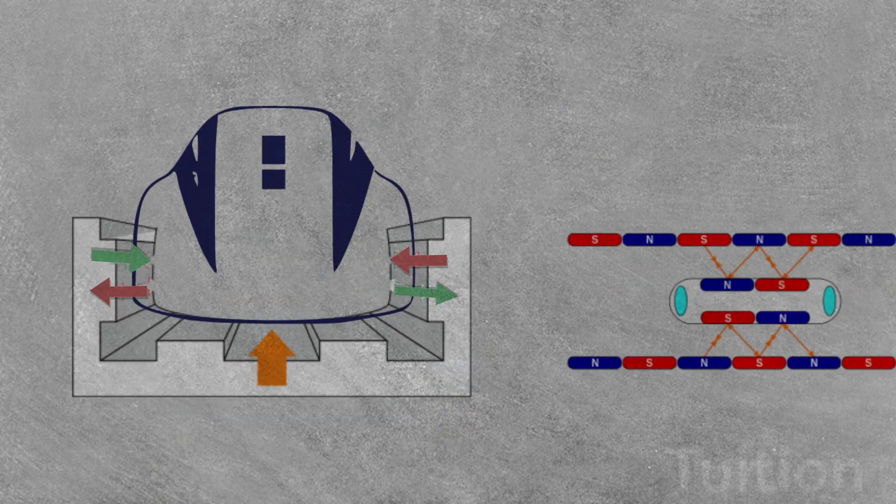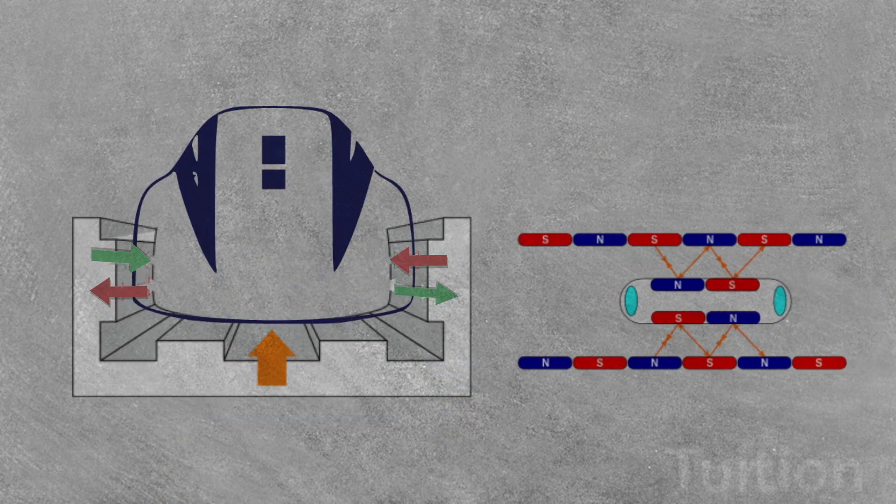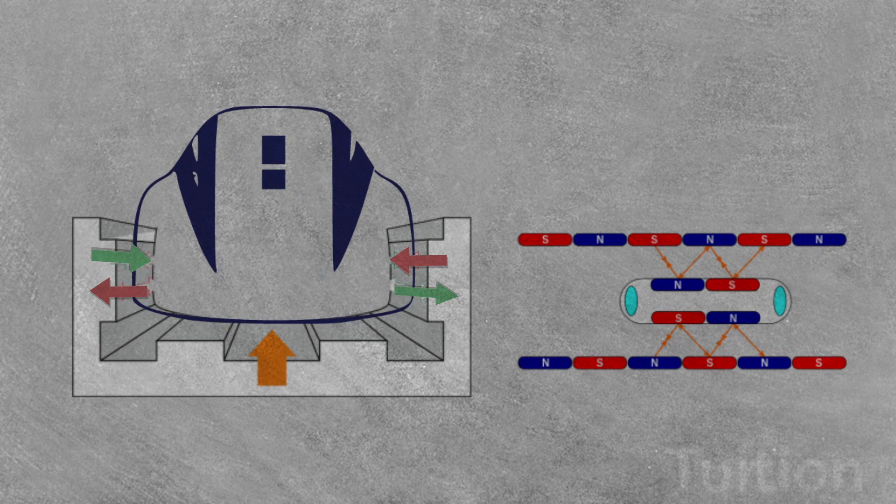The electric current supplied to the coils in the guideway walls is constantly altering to change the polarity of magnetized coils. This change in polarity causes the magnetic field in front of the train to pull the vehicle forward.